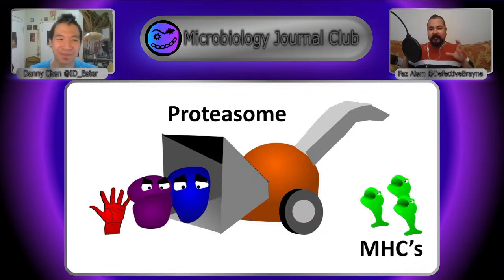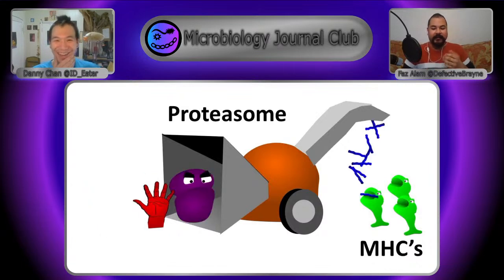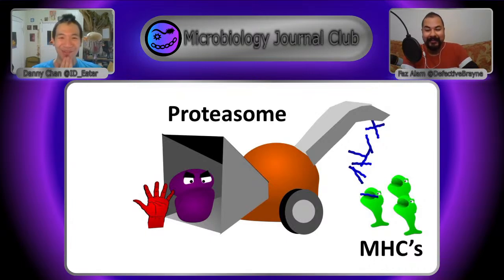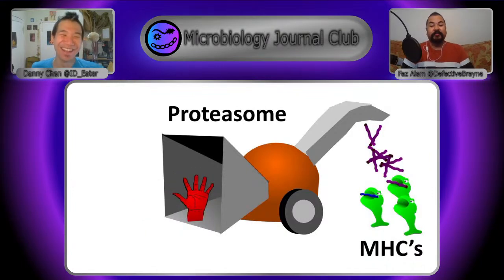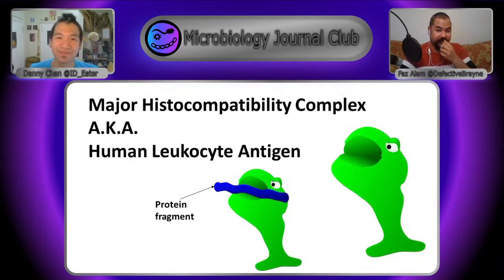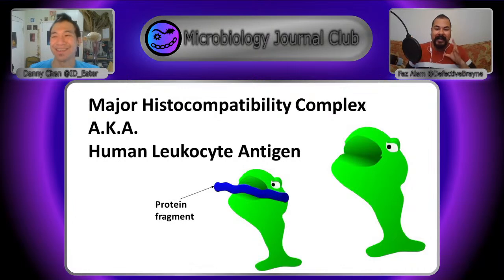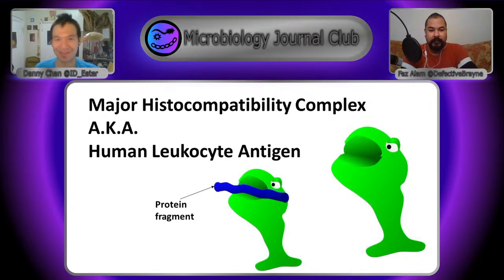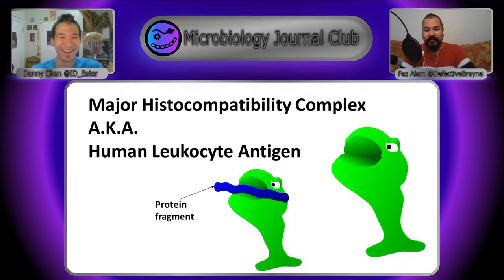The MHCs hang out on the other side of that proteasome to pick up any protein fragments, and those fragments get expressed on the cell surface. Another note on nomenclature: MHC, which stands for Major Histocompatibility Complex, is also referred to as HLA — Human Leukocyte Antigen. These terms are interchangeable. The paper uses HLA, so we'll try to use that consistently. When the T-cell sees an antigen it doesn't like, that's when it knows to react.